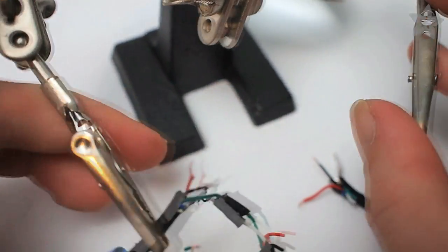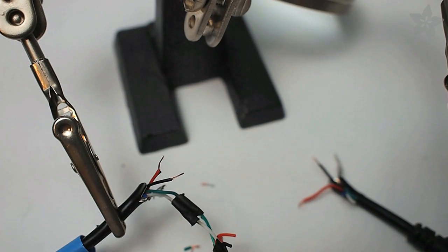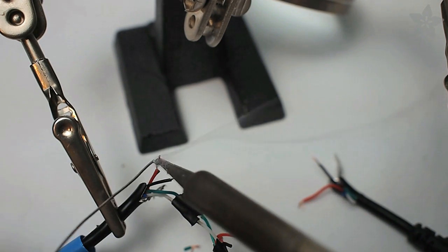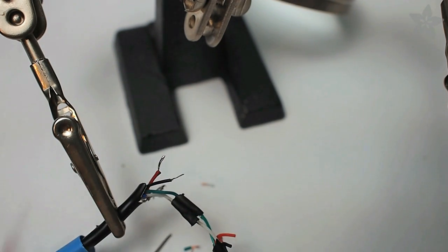Repeat that process twice more with the male micro USB connector, and you only need to connect the black and red wires to provide power to the Raspberry Pi.